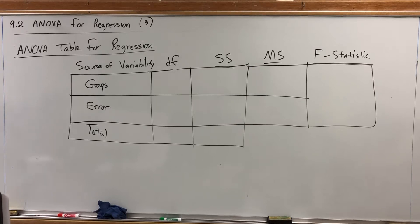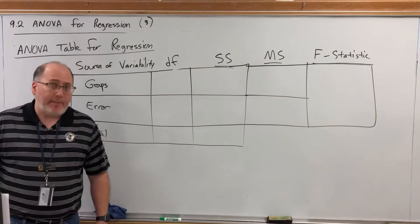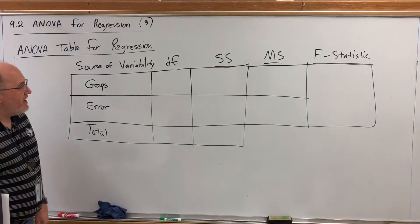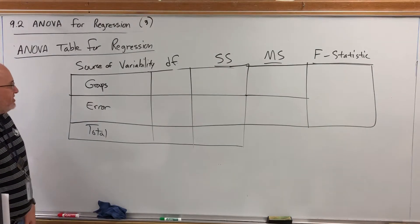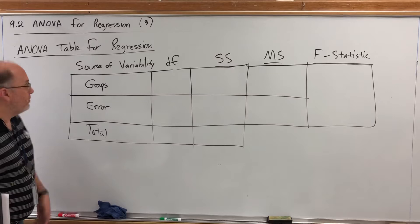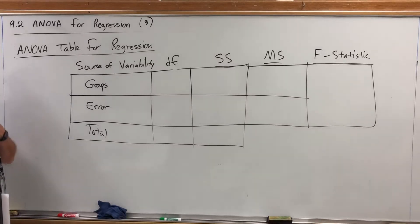Section 9.2 ANOVA for regression video 3. As previously when we did ANOVA for testing multiple population means, we're going to have an ANOVA table when we're testing the effectiveness of a model for ANOVA table for regression if you will. This table looks exactly like the one we saw before.